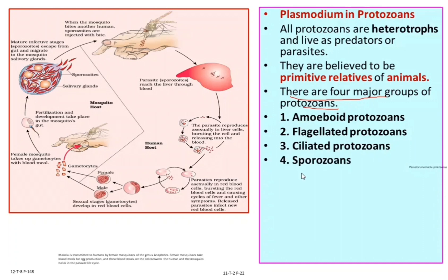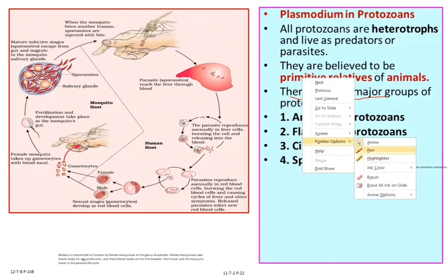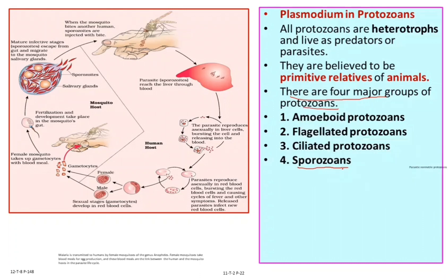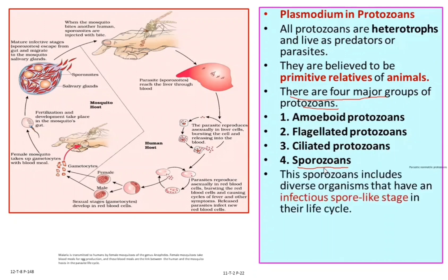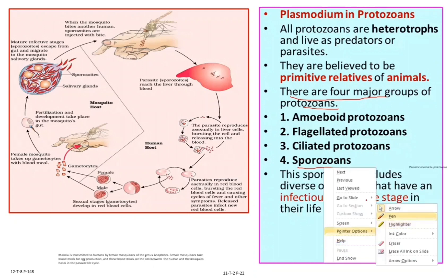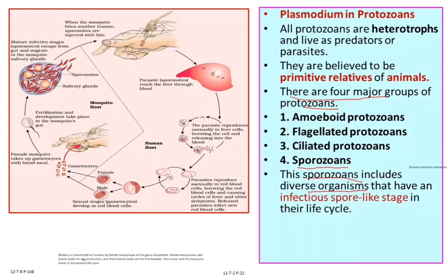One of the groups of protozoans is sporozoans. Sporozoans are non-motile protozoans. They include diverse organisms that have an infectious spore-like stage in their life cycle.